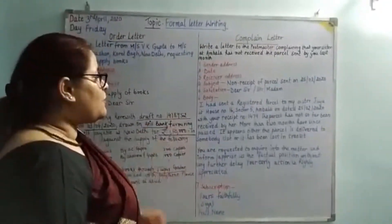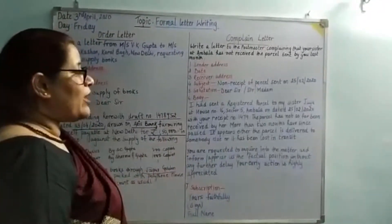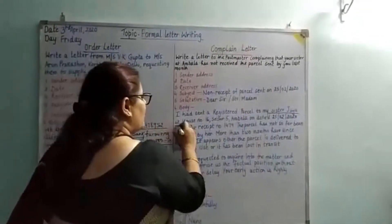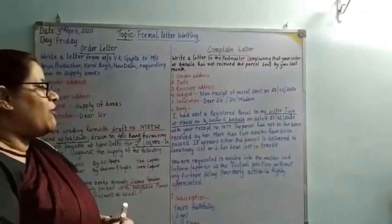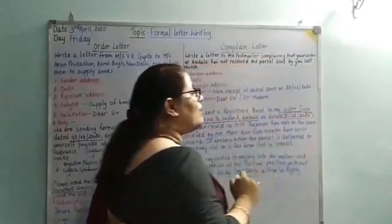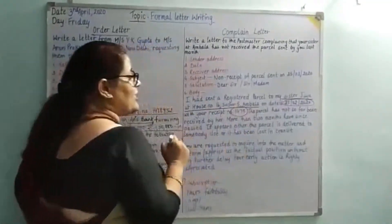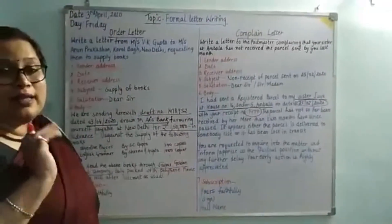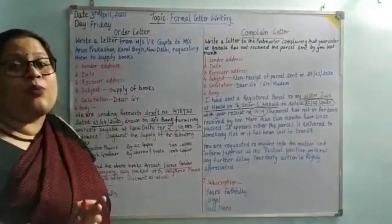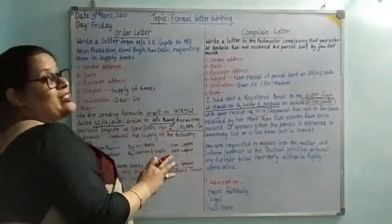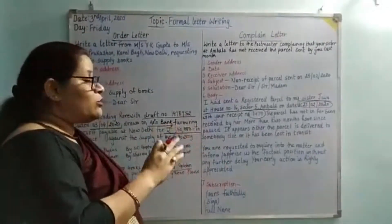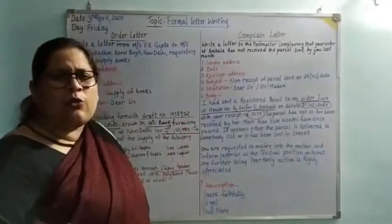The first paragraph says: 'I had sent a registered parcel to my sister Jaya at house number 16, Sector 5, Ambala, on 25th February 2020, vide parcel number 1479. The parcel has not been received by her.' This is the complaint — the parcel sent using post office services has not been received. More than two months have since passed. It appears either the parcel was delivered to somebody else or it has been lost in transit.